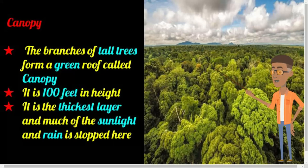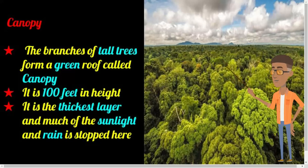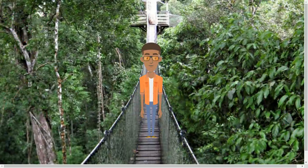The canopy looks like an umbrella. It is the thickest layer and much of the sunlight and air is stopped by the thick foliage. Some animals in the canopy never go to the forest floor as they get plenty of food there. Animals found in the canopy include many birds, monkeys, sloths, lizards, snakes, insects, and many more. Canopy walkways, also called tree-top walkways, are useful for researchers to study and pass through the canopy.